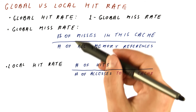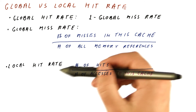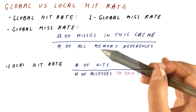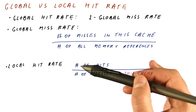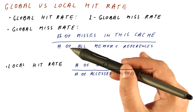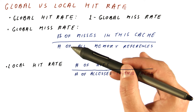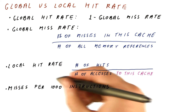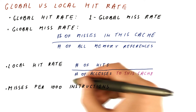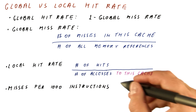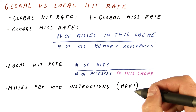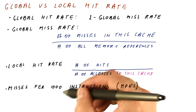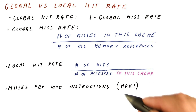Another popular metric of how often the cache hits, that tries to capture the behavior of caches that are not the level 1 cache, is misses per thousand instructions, or MPKI, where K stands for kilo instructions.